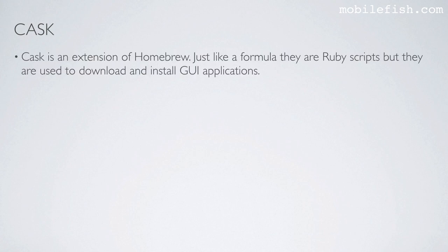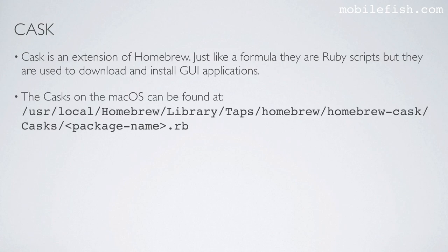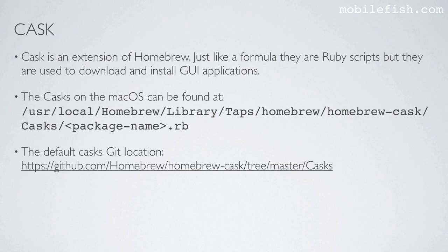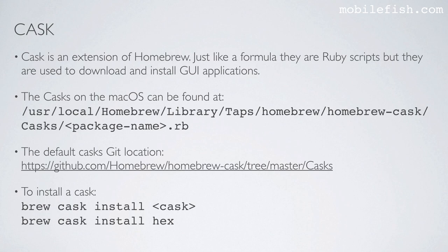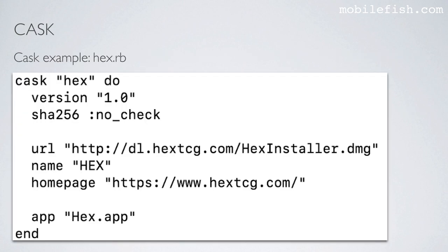Now I will explain the term cask. Cask is an extension of Homebrew. Just like a formula, there are Ruby scripts, but they are used to download and install GUI applications. The casks on macOS can be found at this location. The default cask git location can be found at this location. To install a cask, type this command — here is an example to install the Hex package. Here is a cask example of the package Hex, with a URL to download the Hex installer DMG file.